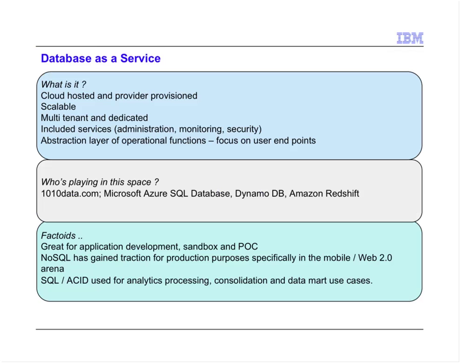Database as a service — what is it? You may hear the terms DBaaS or DWaaS. I'm going to mash them into one and just call it database as a service. It could support a transactional workload, an analytical workload, or things like JSON or XML documents. Typically they hold the same type of qualifiers. It's cloud-hosted and provisioned — it could be running on Amazon's cloud, Microsoft Azure's cloud, or IBM's own cloud — with some facet of scalability: leveraging cloud components to expand and contract the database based on workload and market demand.